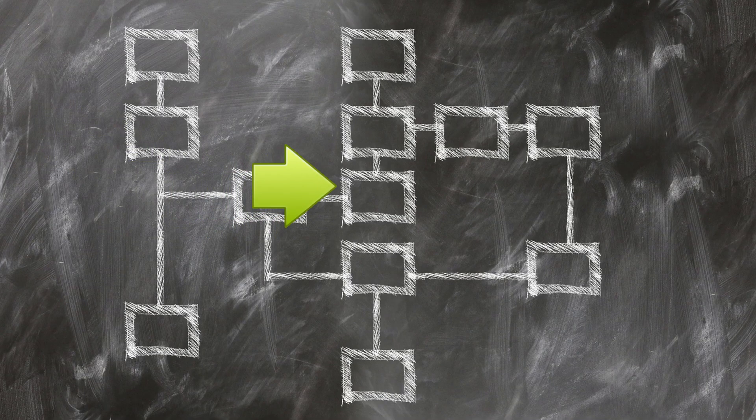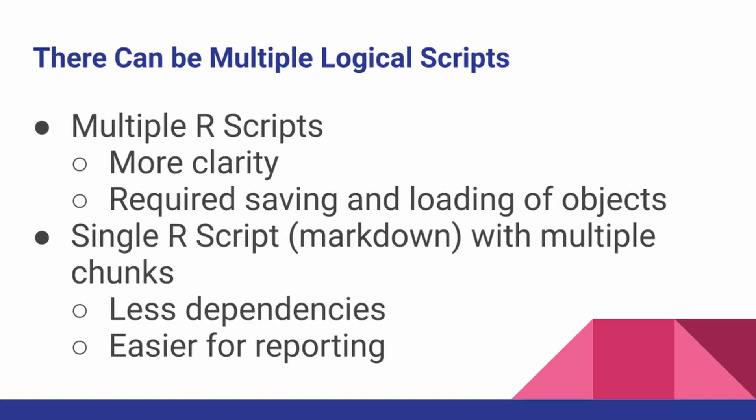There can of course be multiple logical steps. In the previous picture I only showed logic as a single step, but there can be multiple scripts or multiple folders in a processing section. Using multiple R scripts gives more clarity about what each one is trying to do, but requires saving and loading objects between scripts. If you clump everything into a single large R Markdown file there's less dependency on object loading, and it's easier to generate a report on a GitHub page — but it depends on your workflow and how many people you're working with.